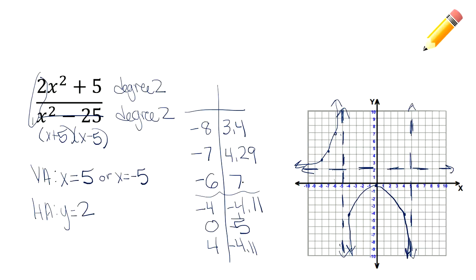We've got one more section to check. I'm going to extend my table and check 6, 7, and 8. Plugging in 6 gives 7, plugging in 7 gives 4.29, and plugging in 8 gives 3.4. Kind of neat how this matches the left side. So 6 and 7, 7 and 4.29, and 8 and 3.4 — something about right there. That is my graph of this particular function, and that's the end of this video. See you later, Sabers.